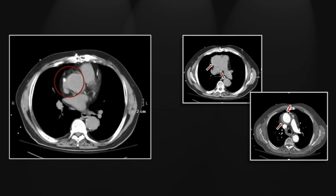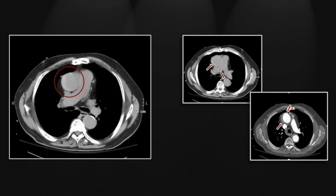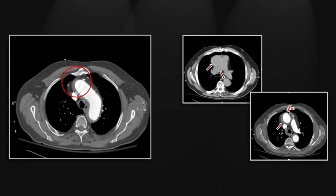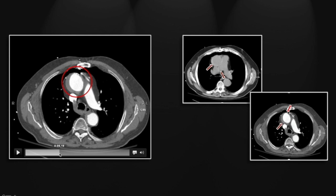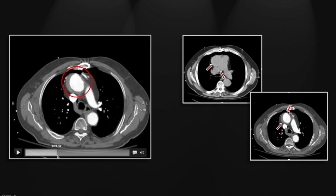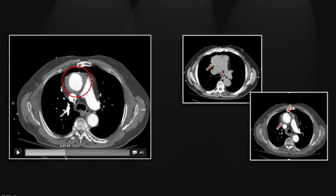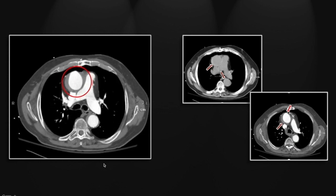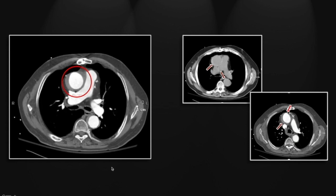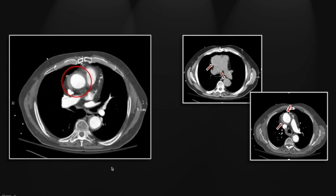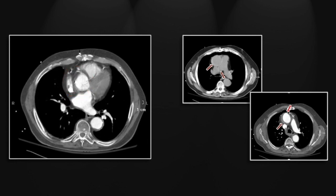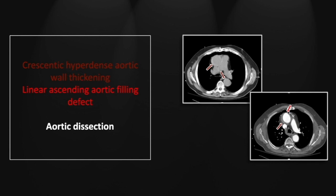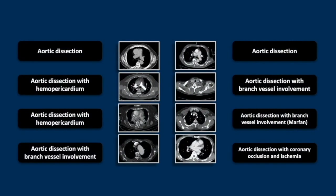There is that hyperdense crescent on non-contrast imaging, and on the contrasted study you can see the distortion of the ascending aorta. Note the small dissection flap and contrast material within the aortic media. You can follow that hypodense crescent all the way to the undersurface of the aortic root. So that is a classic aortic dissection on contrast and non-contrast imaging.